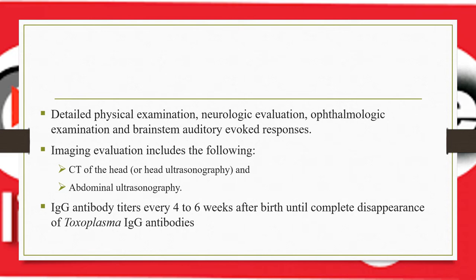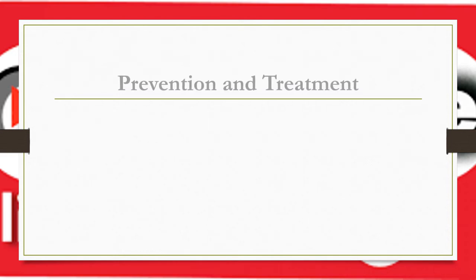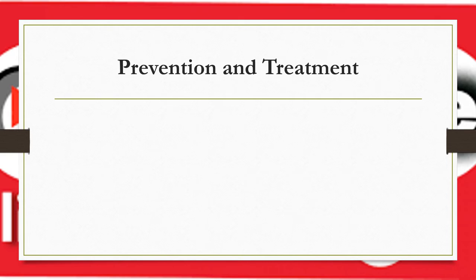IgG antibody titer is a useful diagnostic test for congenital toxoplasmosis in the newborn. If the maternal IgG is expected to disappear after a few months but titers progressively increase instead, this indicates transmission of congenital toxoplasmosis from the mother to the newborn.